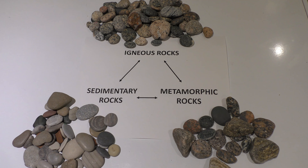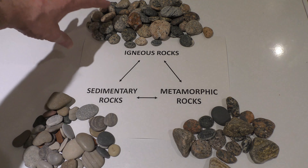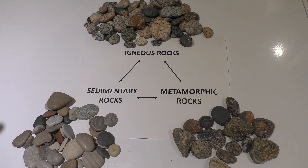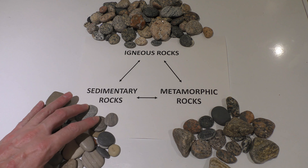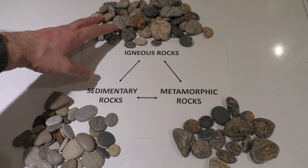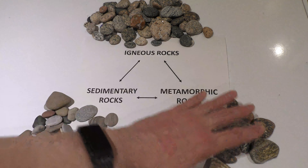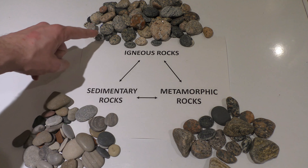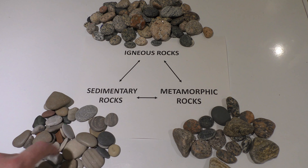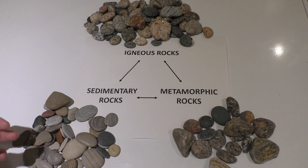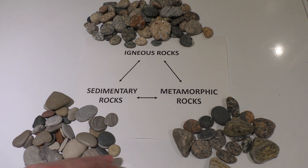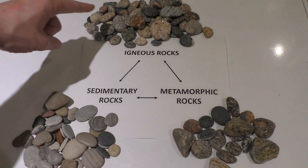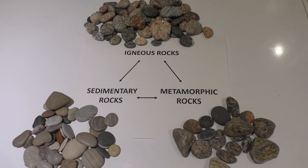We call this the rock cycle because if we break up igneous rocks and mash those pieces together we're going to make a sedimentary rock. If we heat up and put a lot of pressure on an igneous rock we're going to make a metamorphic rock. Sedimentary rocks can be made up of pieces of either igneous or metamorphic rocks, and metamorphic rocks are formed by heating and pressurizing either sedimentary or igneous rocks. So each rock type can turn into one of the other rock types.